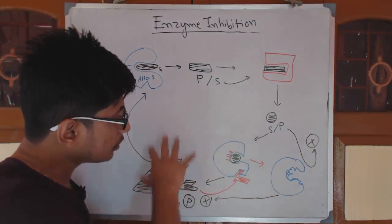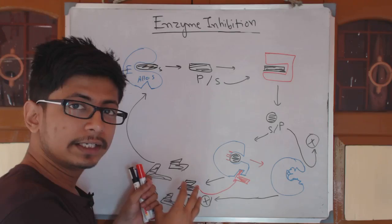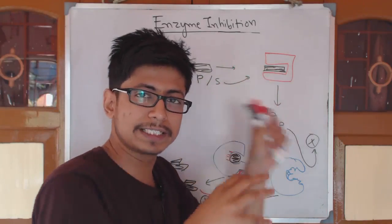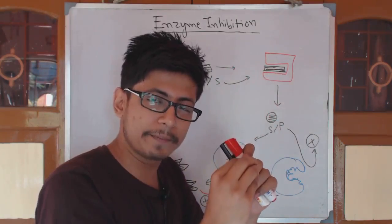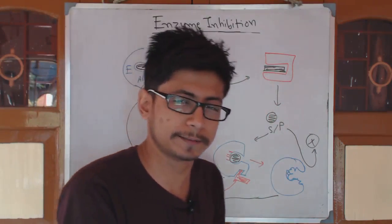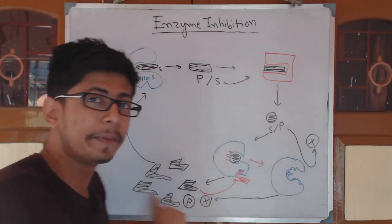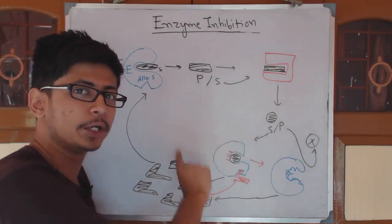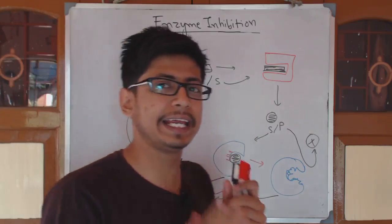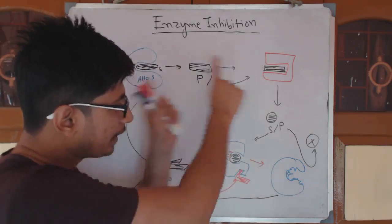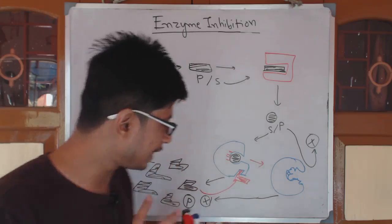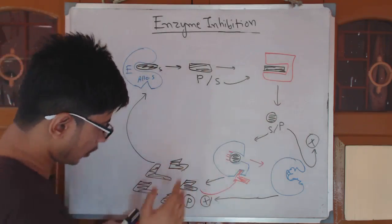So what we observe is a downstream product going upstream to bind one of the enzymes, preventing further product preparation. That is a feedback loop, and it is known as a negative feedback because it prevents the pathway from going forward.